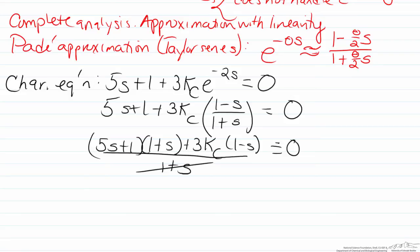that will leave us with an s squared term of 5s times s, so that will be 5s squared. We will have an s term of 5s times 1 plus s times 1, so that will be 5s plus s, or 6s, and the constant will be 1. We can multiply the other part and we will get plus 3Kc minus 3Kc times s equals 0.